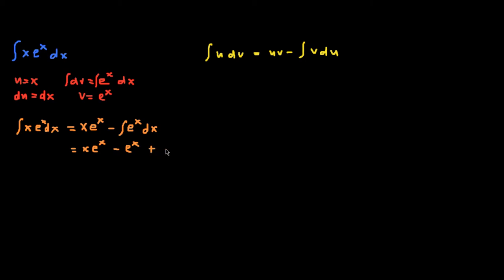Factoring out e to the x, we have e to the x times (x minus 1) plus c, and this is now our answer.